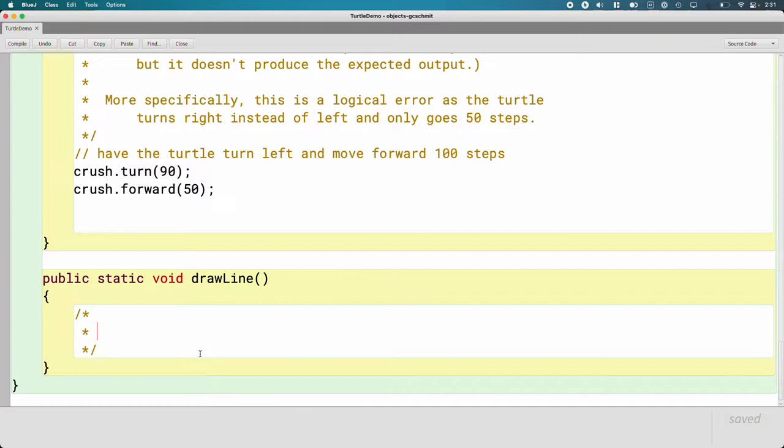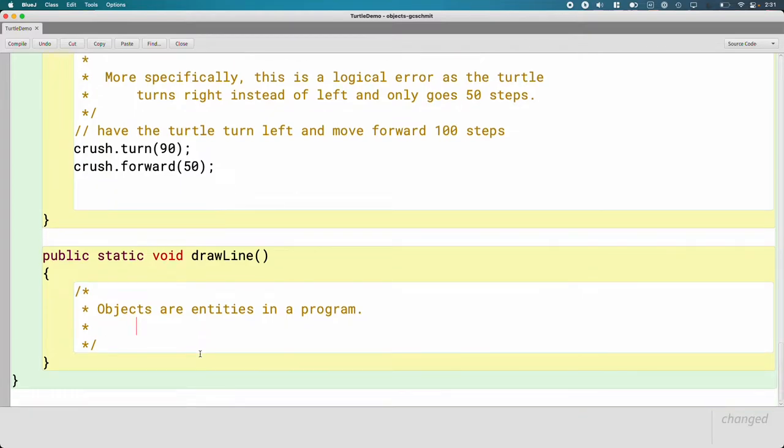And I always struggle to actually come up with a definition for what an object is because an object is such a generic concept. And so I don't think I've come up with a good one, but the best I've got so far is objects are entities in a program. Entity is also a super generic word. So while I don't think that's a very good definition, I think that what's maybe more important is like, well, what does an object have? And we can get our understanding through that instead.